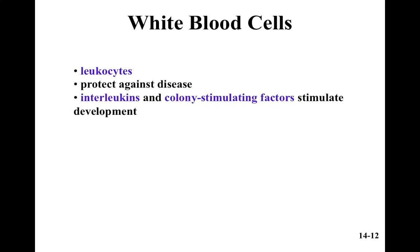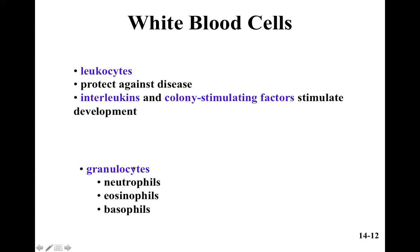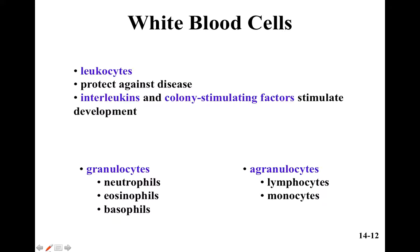White blood cells, also called leukocytes, protect against disease. Interleukins and colony-stimulating factors stimulate their development. There are granulocytes — called that because they appear to have granules when viewed under a microscope — which include neutrophils, eosinophils, and basophils. The agranulocytes are the lymphocytes and monocytes.